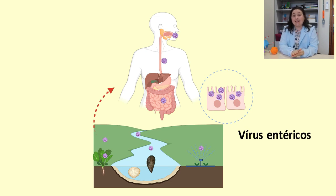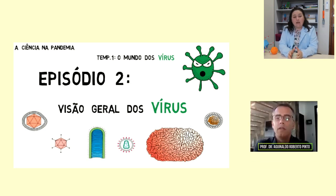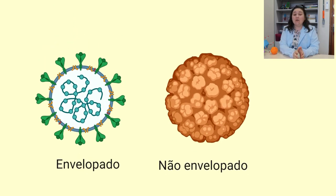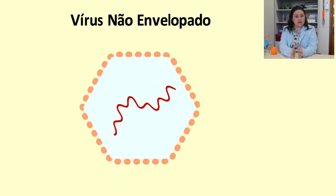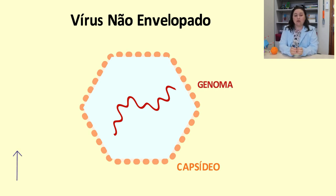Esses vírus são de natureza não envelopada. Vamos lembrar um pouquinho sobre a estrutura desses vírus, que já foram discutidas pelo professor Aguinaldo. Nós temos basicamente os vírus envelopados e os vírus não envelopados. Os vírus não envelopados são aqueles que possuem um capsídeo unicamente proteico, e esse capsídeo protege o genoma viral. Essa estrutura faz com que haja uma enorme resistência desses vírus nos ambientes.